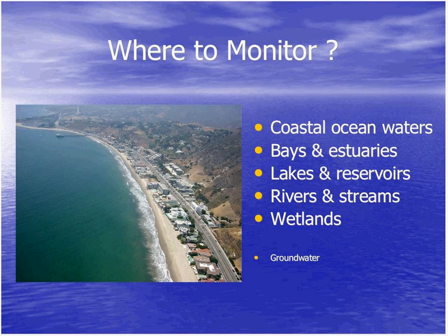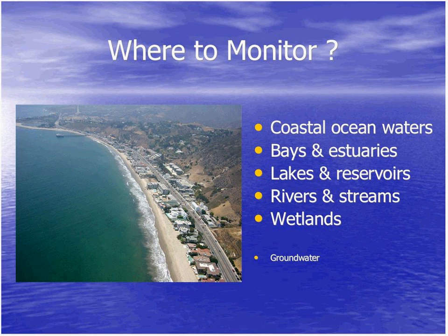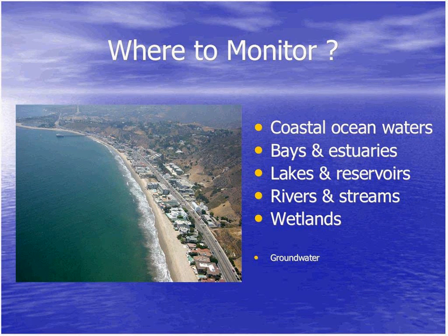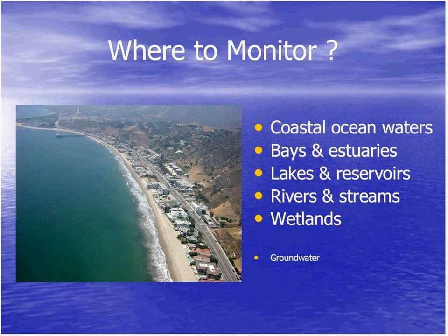Where do you monitor? There are a lot of different types of surface waters: coastal ocean waters, bays and estuaries, lakes and reservoirs, rivers and streams, and wetlands. These are all important surface water types that you'd want to monitor, and you probably need different strategies and different types of monitoring programs to assess different water body types.